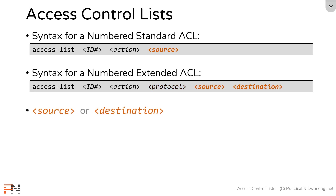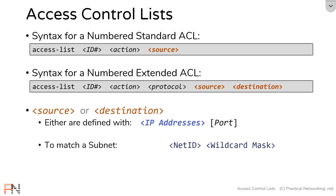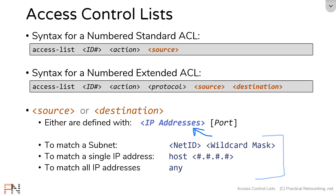Finally, we have the source and destination fields. In a standard access list there is only a source; extended access lists have both source and destination. To specify a single subnet, you provide the network ID and the wildcard mask. To specify a single IP address, use the keyword 'host' followed by the IP address. To specify all IP addresses, simply use the keyword 'any'.